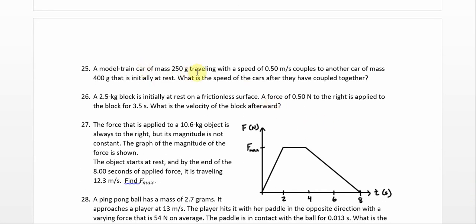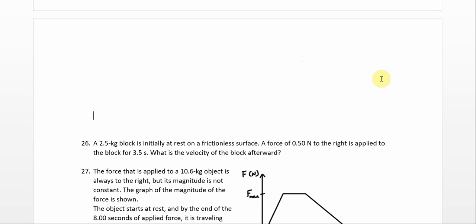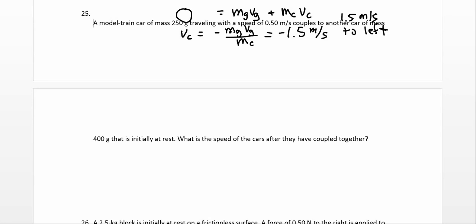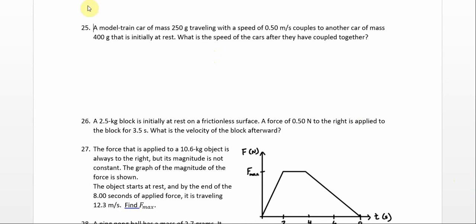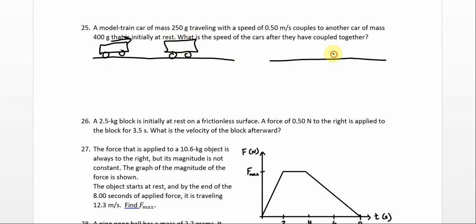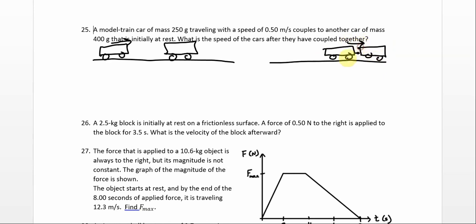Number 25. A model train car of mass 250 grams traveling at 0.50 meters per second couples to — meaning attaches to — another car of mass 400 grams that is initially at rest. What is the speed of the cars after they have coupled together? This guy's moving to the right and the other one is at rest — that's the before picture. After, they're linked to each other and moving to the right.